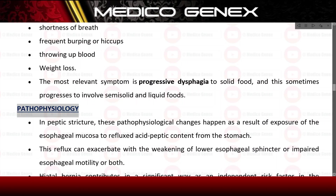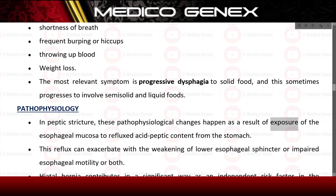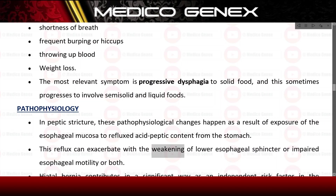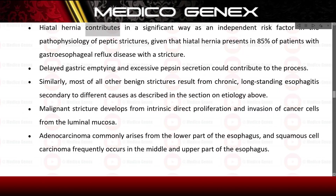In peptic stricture, pathophysiological changes occur as a result of exposure of the esophageal mucosa to reflux acid and peptic content from the stomach. This reflux can be exacerbated by weakening of the lower esophageal sphincter, impaired esophageal motility, or both.